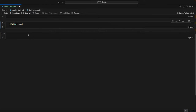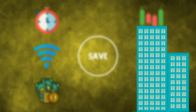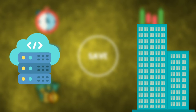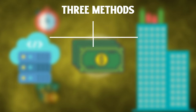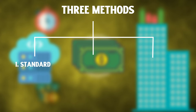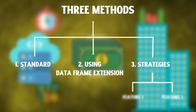Now we move to the next section: how to access these functions. There are different ways, and the more efficient you are, the more resources you save — which can save your money, especially if you're running a cloud server. We have three methods: the first is standard, the second is using DataFrame extensions, and the third is strategies, which includes two amazing features you won't find in any other library.